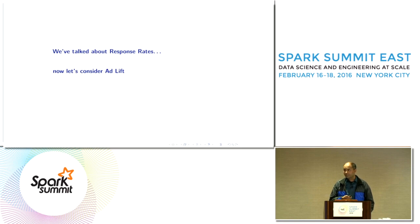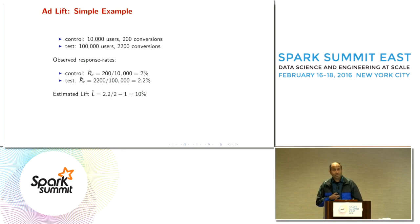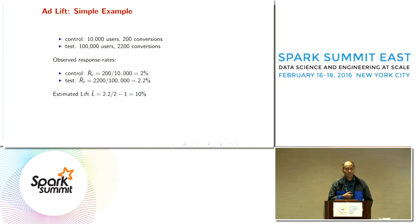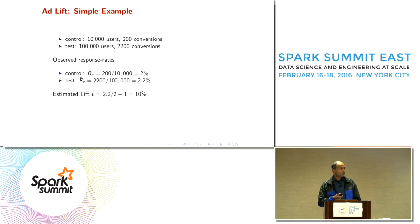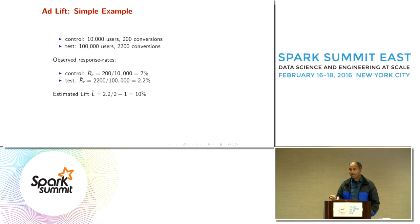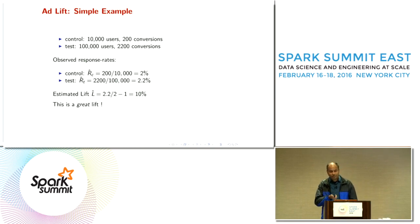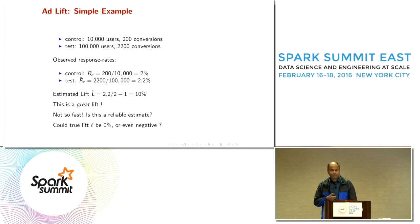Now let's talk about how we compute ad lift. In a simple example with 10,000 control users and 200 conversions, and 100,000 test users and 2,200 conversions, the control response rate is 2% and the test response rate is 2.2%. The lift calculation gives us 10% — that's our estimate. But the bigger question is: how reliable is it? What if the true lift could be negative or zero and we're observing 10%? We need to quantify that uncertainty.